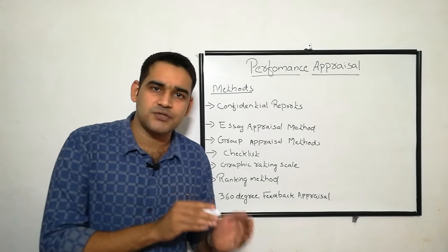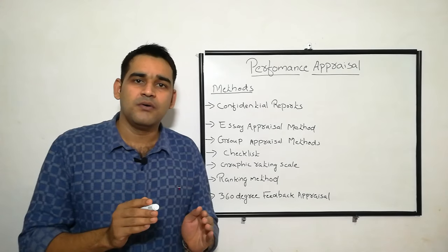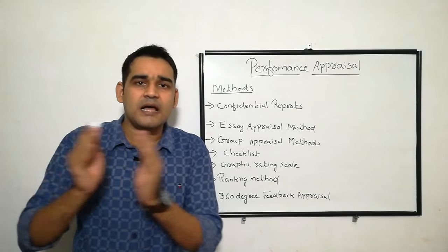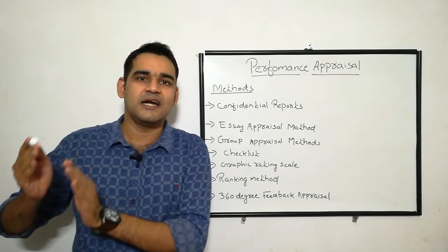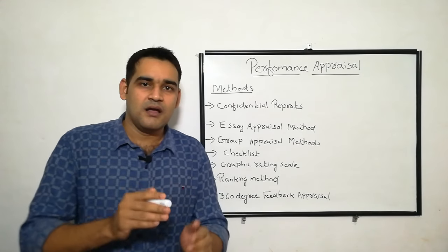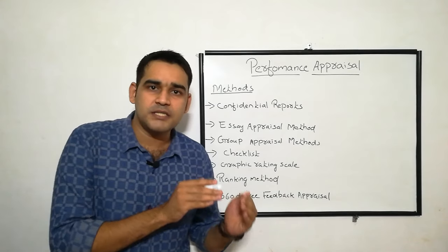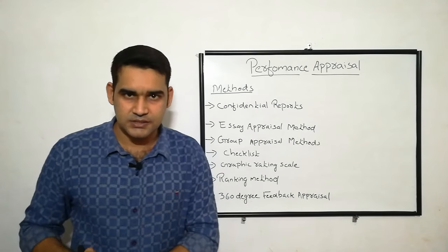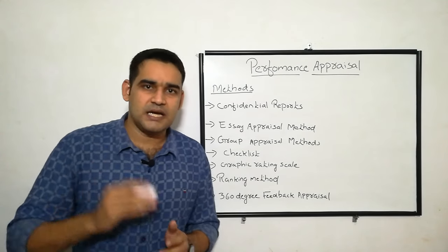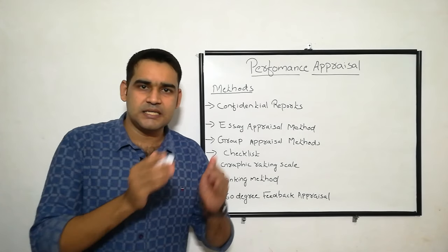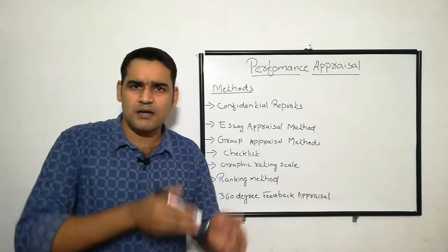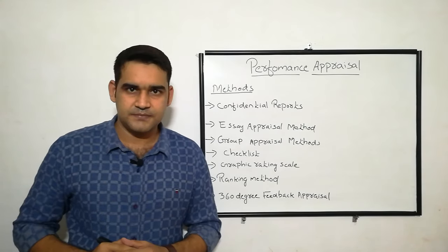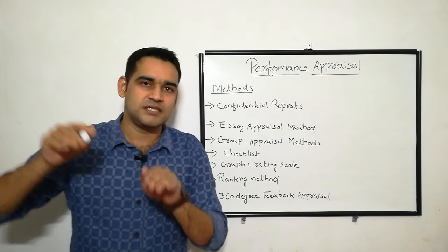The fourth step is to compare the actual performance with the standards and communicate the results. In the first step you prepared a standard; now you have a result from the actual performance. You are comparing whether the staff has met the standard or not, and communicating with the staff — such and such staff are not coming on time, such and such staff are not wearing the uniform properly, their behavior should be changed.